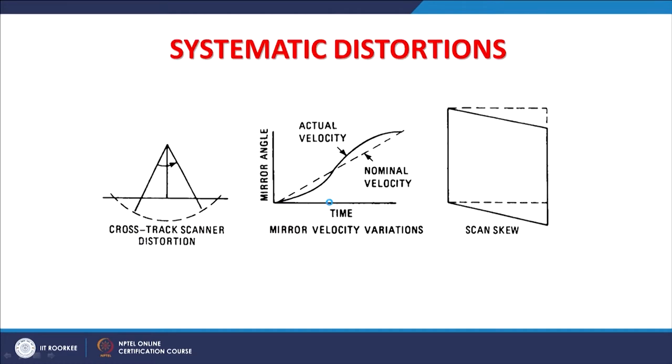Earlier we had opto-mechanical scanners doing cross-track scanning, introducing cross-track scanner distortion. If someone is doing change detection studies involving more than 40 years of data like Landsat 1 or 2, they must remember that raw images were suffering from cross-track scanner distortions. When we do georeferencing, almost all these geometric distortions are removed to a large extent. That is why georeferencing is very much required.